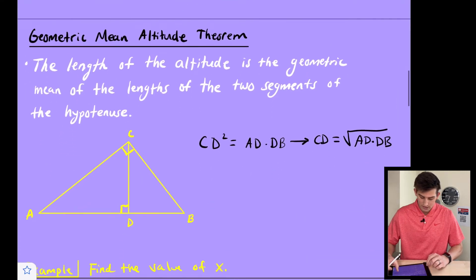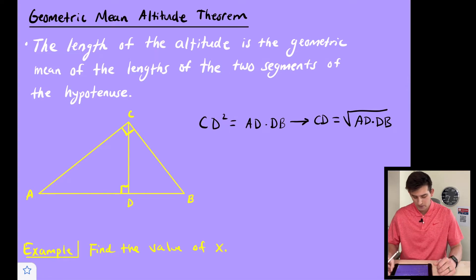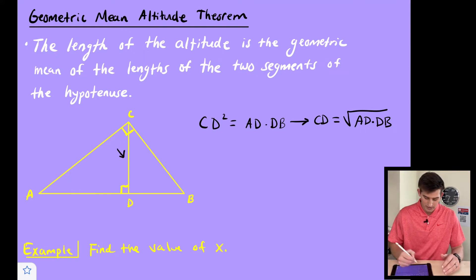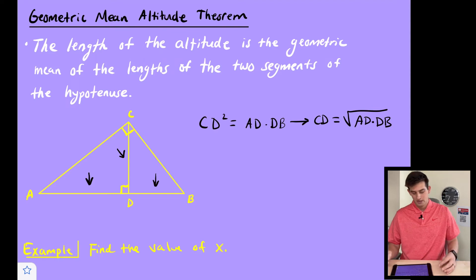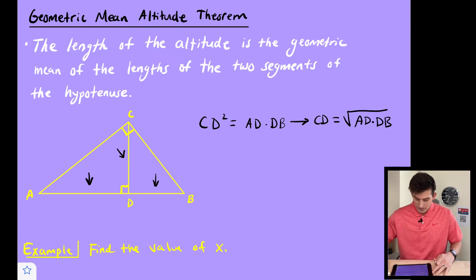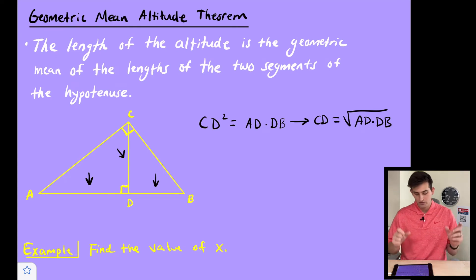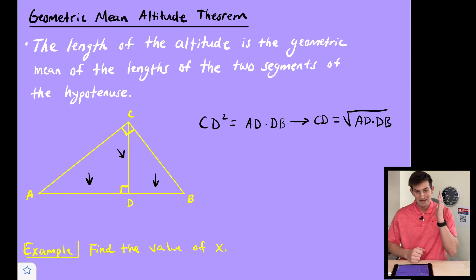Now let's see how geometric mean applies to altitudes in right triangles. The geometric mean altitude theorem states: the length of the altitude is the geometric mean of the lengths of the two segments of the hypotenuse. So altitude CD squared equals AD times DB — the altitude squared equals the product of the two hypotenuse segments. Simplified: the altitude equals the square root of the product of the hypotenuse segments.